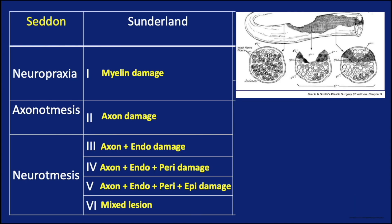Sometimes a nerve injury may not fit exactly under one of the grades proposed by Sunderland. So the grade showing a mixed lesion was proposed by McKinnon and Dellen. This represents multiple areas of the nerve showing different grades of injury.